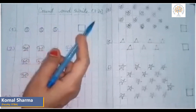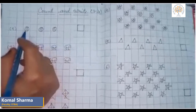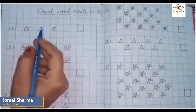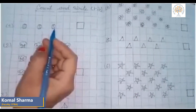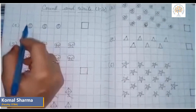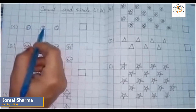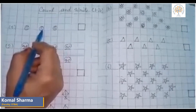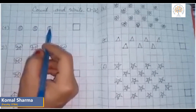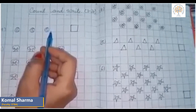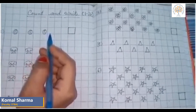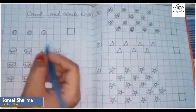Count and write the numbers. Now we shall count the pictures and write the correct number. Let us count the balls. One, two, three. There are three balls. How many balls are there? Three. So the answer is three.